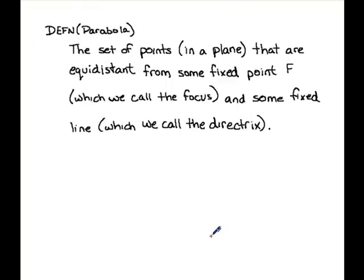By definition, a parabola is just a set of points in a plane, which is that sheet of paper, that are equidistant from some fixed point F which we're going to call the focus and some fixed line which we'll call the directrix.